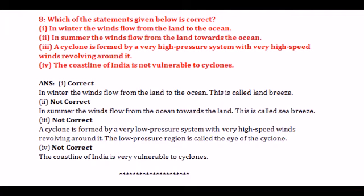Correct statement: A cyclone is formed by a very low pressure system with very high speed winds revolving around it. The low pressure area is called the eye of the cyclone. In summer, the correct statement is that wind flows from the ocean towards the land — this is called sea breeze. I hope all the question answers are clear.